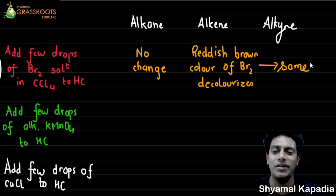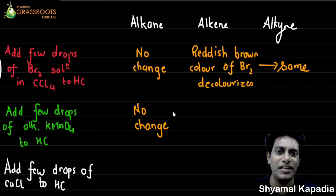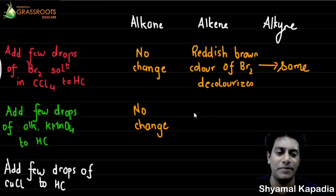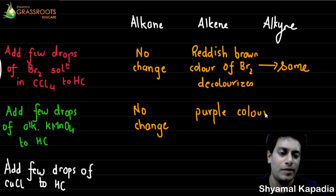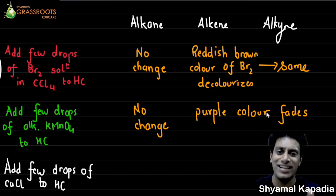With alkane, there is no change. With alkene and alkyne, the pinkish-purple color of alkaline potassium permanganate fades away. So the purple color fades for both alkene and alkyne — again, I can't use this solution to distinguish between alkene and alkyne.